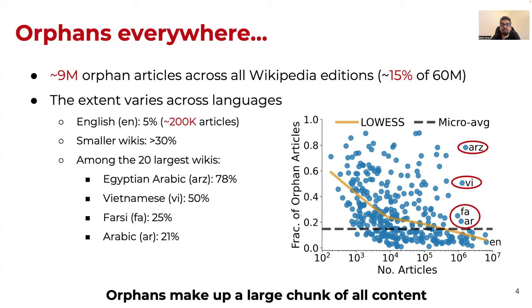Also, while usually smaller Wikipedias have higher orphan rates, which is upwards of 30%, there are many Wikipedias among the 20 largest Wikipedia editions, such as Egyptian Arabic, Vietnamese, Arabic, and even Farsi, that have a very high orphan rate, which is upwards of 20% at times, but as high as 80% in the case of Egyptian Arabic.